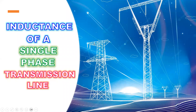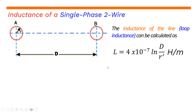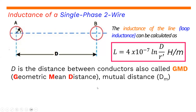So right now I'm going to discuss the inductance of a single-phase transmission line. The inductance of a single-phase 2-wire line, or the loop inductance, can be calculated as L is equal to 4 times 10 to the negative 7 natural logarithm of D over R prime, where the unit will be Henry per meter. Where D is the distance between conductors, also called the GMD, or geometric mean distance, or sometimes also known as mutual distance, or D sub M.